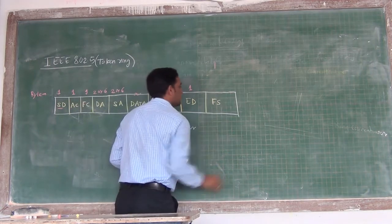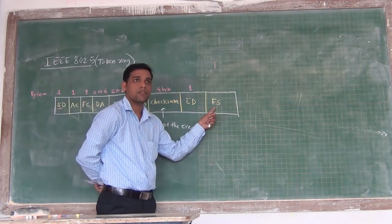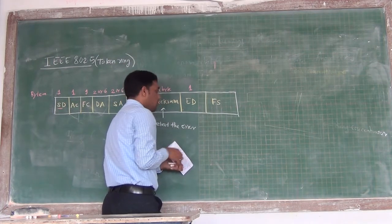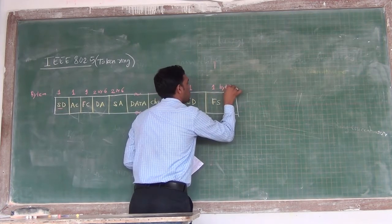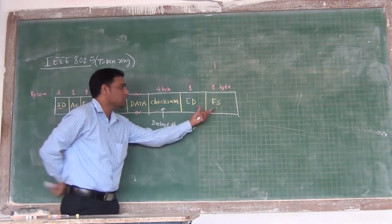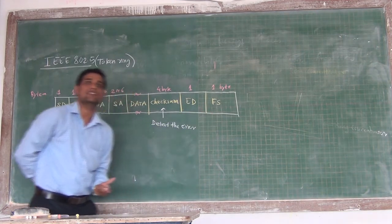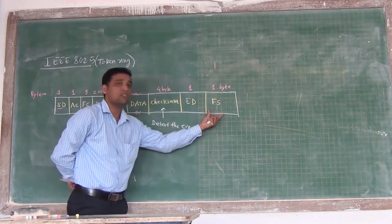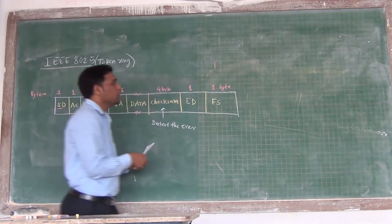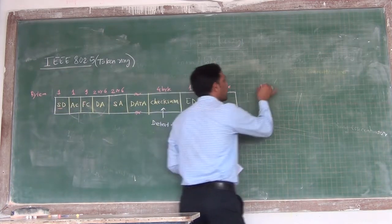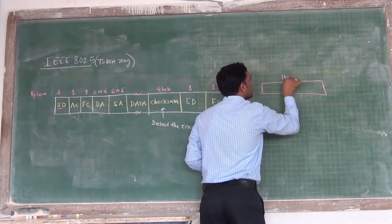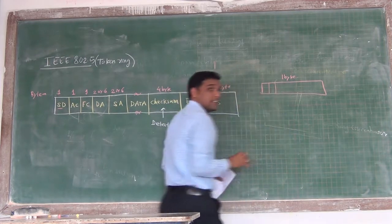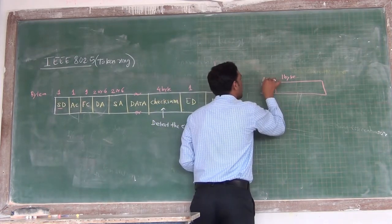The last section is the frame status, which is of size 1 byte. This frame status indicates what exactly the status of the frame is. The size of the frame status is 1 byte, out of which the first 2 bits are used to indicate the status, and those bits are called A and C.